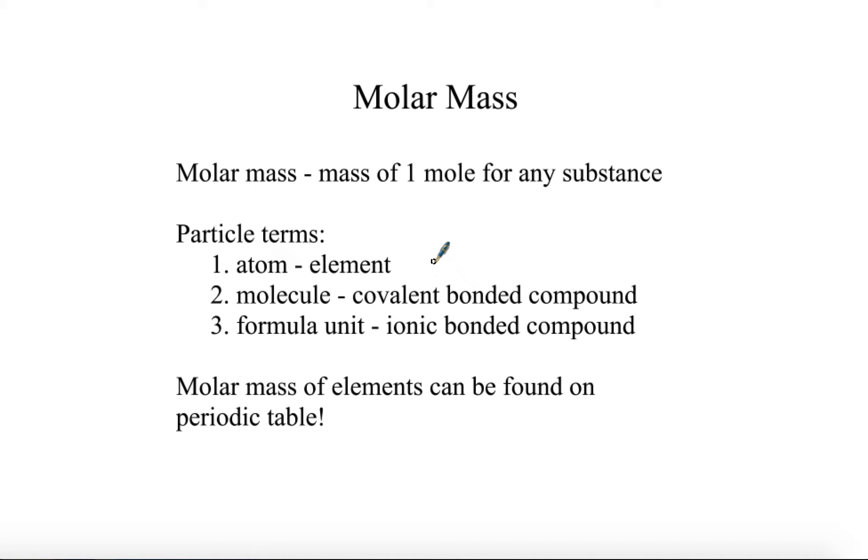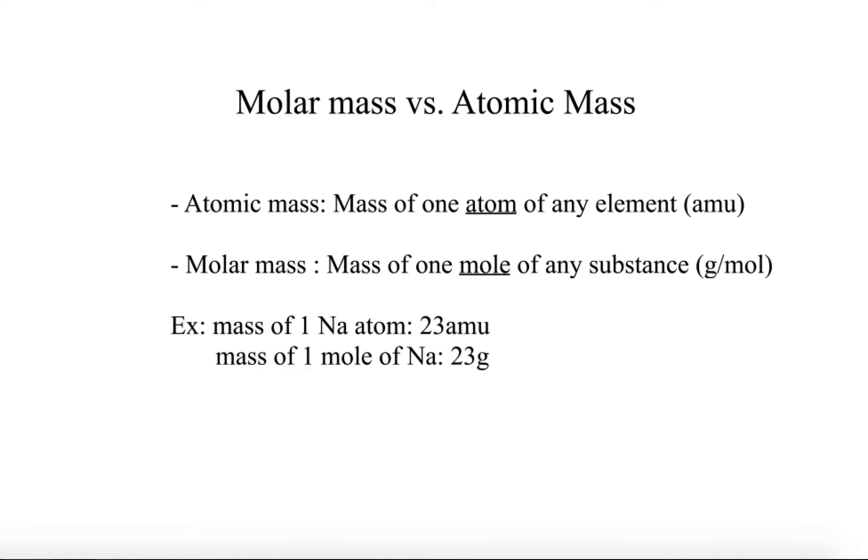The molar mass of elements is whatever mass is listed on the periodic table. The difference between this and atomic mass is that atomic mass is the mass of just one atom of any element, while molar mass is if I have one mole of that substance. The mass of one atom takes on the amu unit - that's atomic mass. But if I have one mole of it, that mass changes to molar mass.